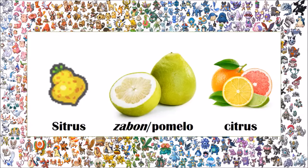The Sitrus berry is a tricky one because of its difference between American and Japanese games. In Japan it's based on the zabon, which is what we know as the pomelo — a type of citrus fruit, sort of like a yellow-green lemon. The English name, of course, is a generic citrus. It is probably one of the only Pokemon berries which is not based on a specific fruit but a generic category, since citrus includes lots of fruits like limes, lemons, oranges, grapefruits, and of course the pomelo, which in Japan is called the zabon. It even resembles the zabon or pomelo.